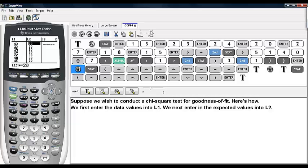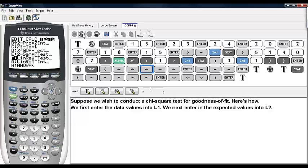Now we may start to conduct the test. To do that, hit STAT, highlight TESTS, and scroll until you get to chi-square GOF TEST. The observed values are in L1, the expected values are in L2, and the degrees of freedom for this are 6.